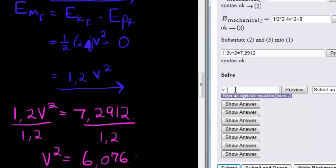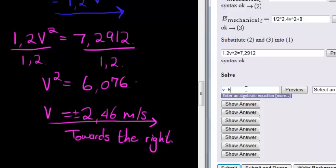And when we solved for V, we're going to use just a positive answer because we are indicating direction anyways. So our final answer was 2.46 meters per second.